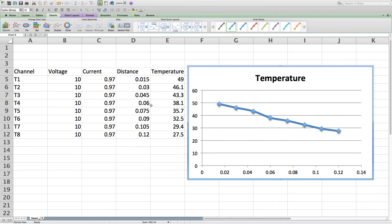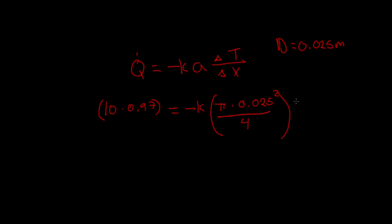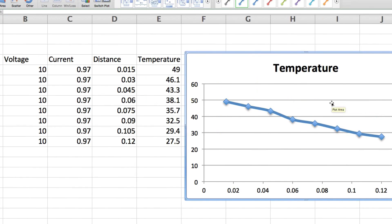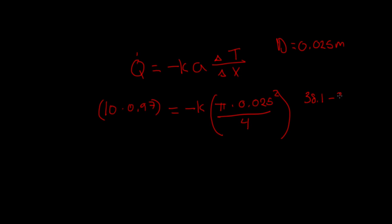So let's use T4 and T5 in this case. So T4 is 38.1, so we have 38.1 minus 35.7. And we said that this was 0.015 meters away each time.